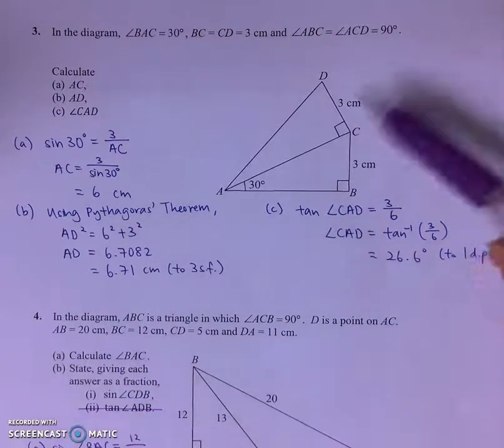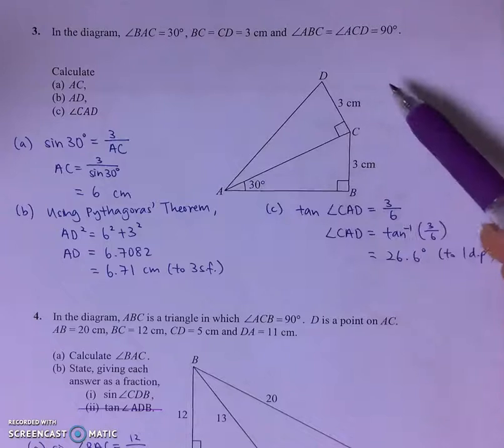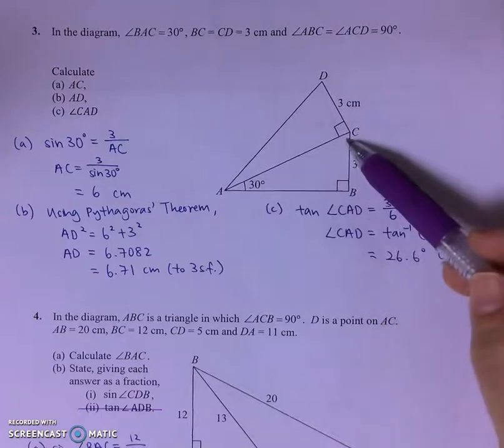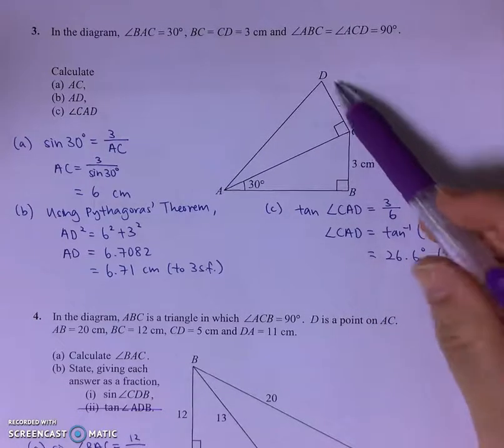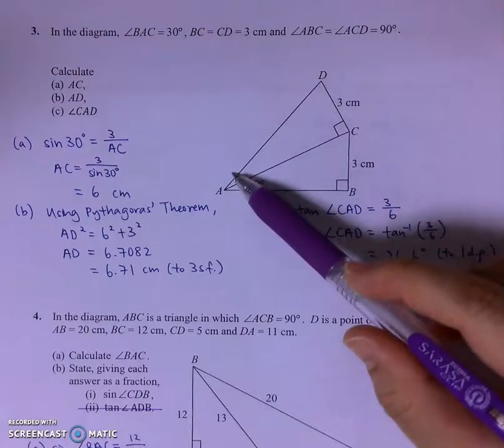For part B, to find the length of AD, I'll make use of the information from part A and the given length of CD and use Pythagoras theorem.